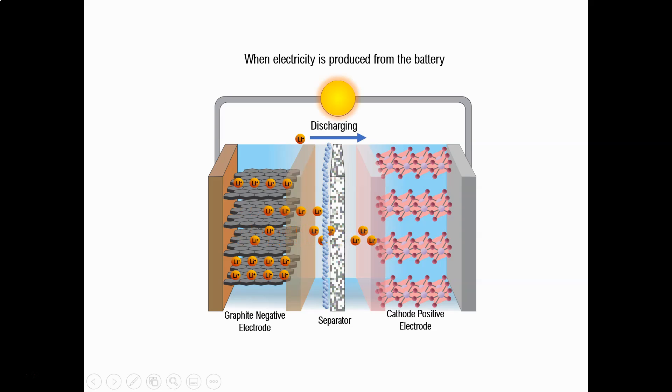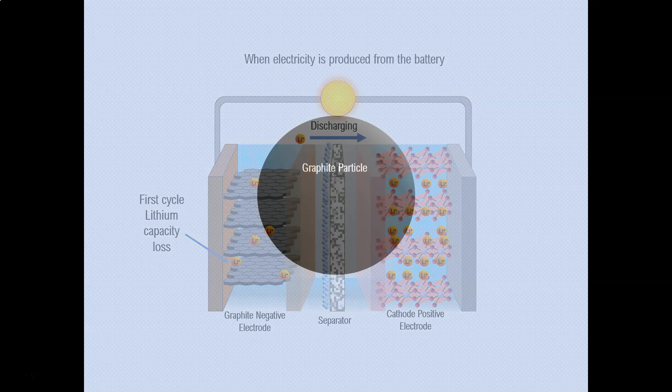As you can see from this diagram there are some lithium ions that are left at the anode. This is called the first cycle lithium capacity loss, which is about eight percent of the lithium lost to the battery and it becomes inactive at the anode.